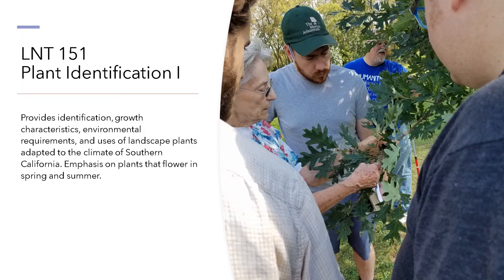LNT 151, Plant Identification 1. This class provides identification, growth characteristics, environmental requirements, and uses of landscape plants adapted to the climate of Southern California. It emphasizes plants that flower in spring and summer.